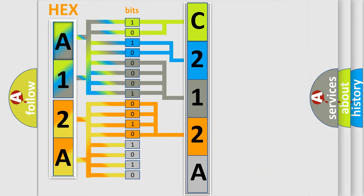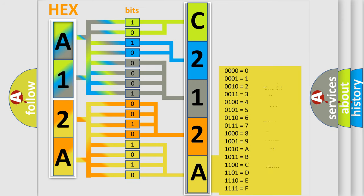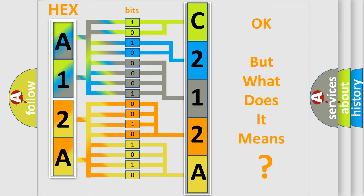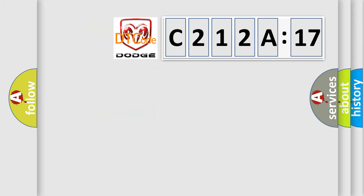A single byte conceals 256 possible combinations. We now know in what way the diagnostic tool translates the received information into a more comprehensible format. The number itself does not make sense to us if we cannot assign information about what it actually expresses. So, what does the diagnostic trouble code C212A17 interpret specifically for Dodge car manufacturers?